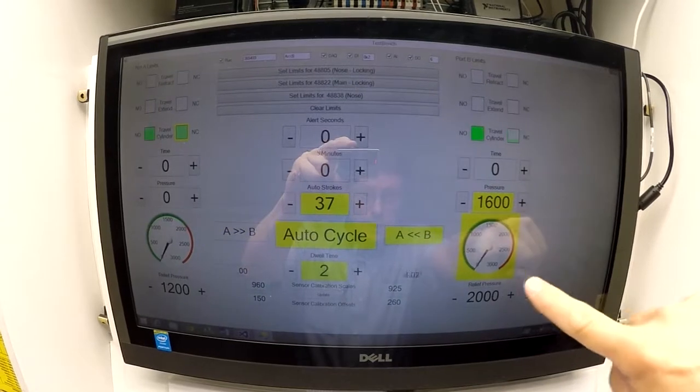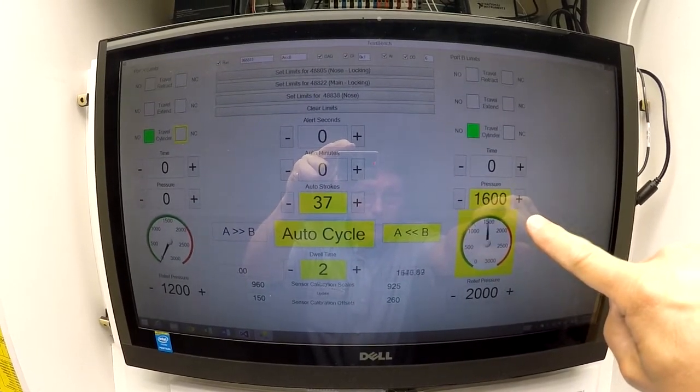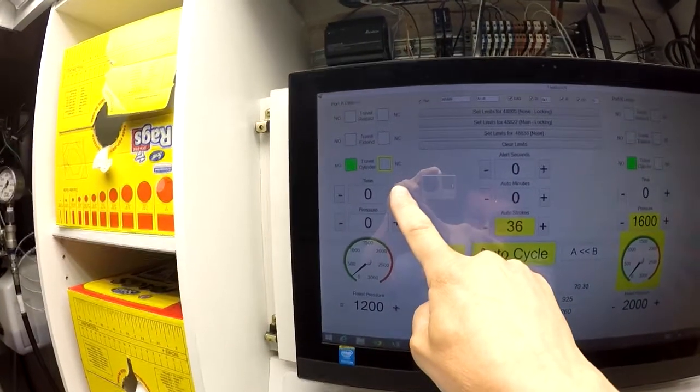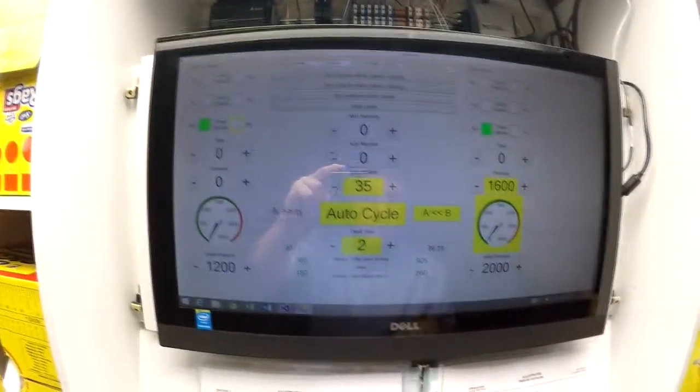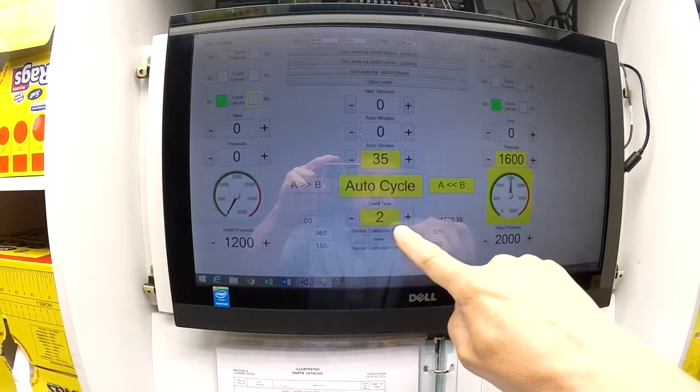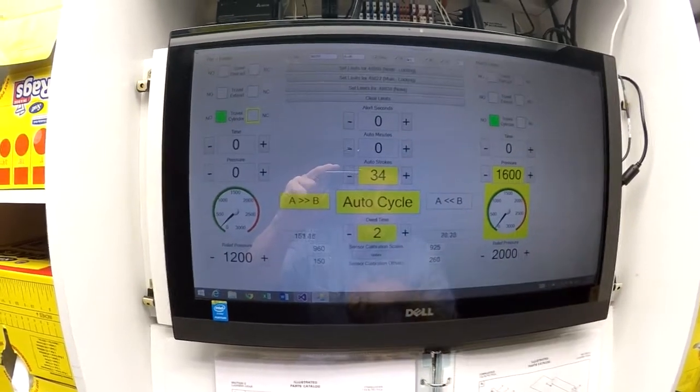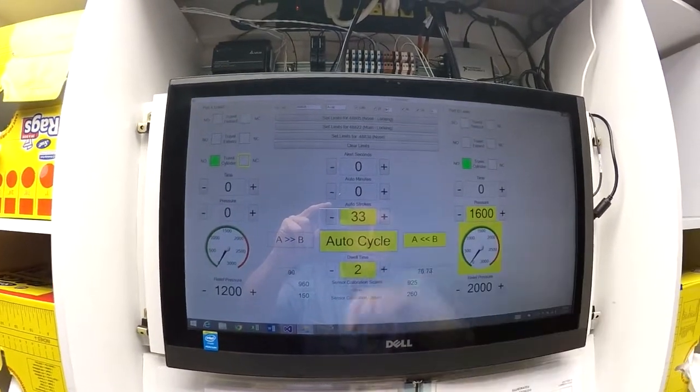Okay, you can see here we're extending the cylinder to a 1600 pound limit and then we are retracting the cylinder until the limit switch is activated. You see the dwell time of two seconds count down between the cycles. Overall the strokes are counted.